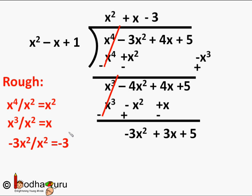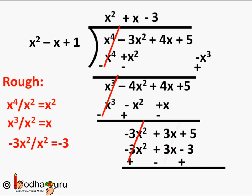We multiply the divisor by minus 3 to get minus 3x² plus 3x minus 3, written below the remaining dividend. Now we subtract: minus 3x² gets cancelled, 3x minus 3x equals 0, and 5 minus of minus 3 becomes 5 plus 3 which equals 8.